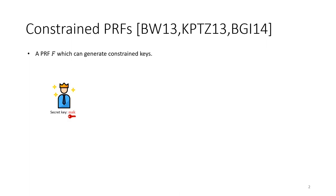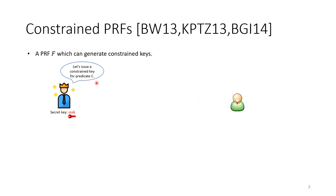In this picture we have a party who holds the master secret key of the PRF and we have a user. At some point, this party decides to give the user a constrained key with respect to some predicate C, and it sends this constrained key to the user.